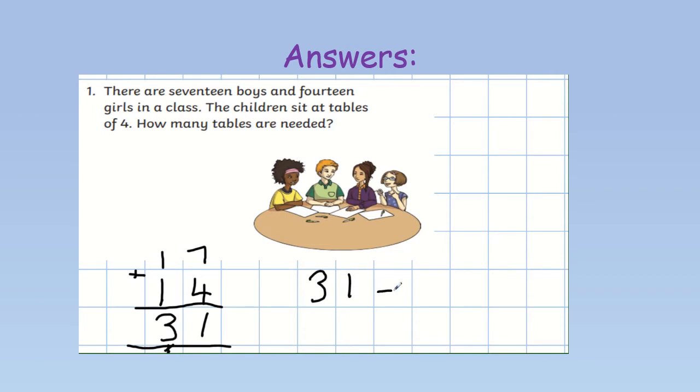So, 31 divided by 4. 4, 8, 12, 16, 20, 24, 28, 32 gives us 8 tables. But, we need to round up because if we had 28 tables, there would be a remainder of 3 children. Where would they sit? So, obviously this is an example of where you need to round up. There will be one table that isn't full but it is needed. How did you do with this question?